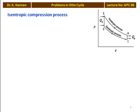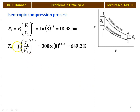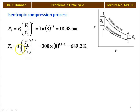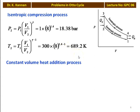For the isentropic compression process 1 to 2, we calculate P2 equals P1 × (V1/V2)^gamma where V1/V2 equals R equals 8. So P2 equals 1 × 8^1.4 equals 18.38 bar. And T2 equals T1 × (V1/V2)^(gamma-1) equals 300 × 8^0.4 equals 689.2 Kelvin.